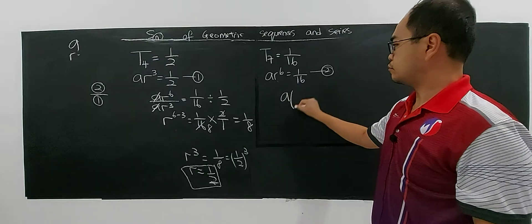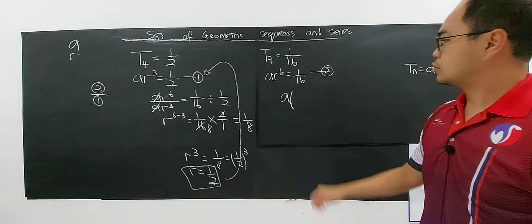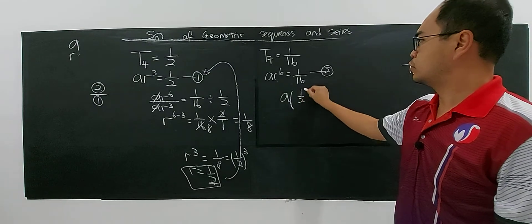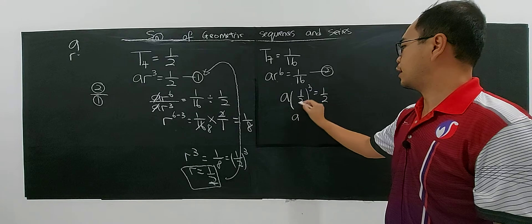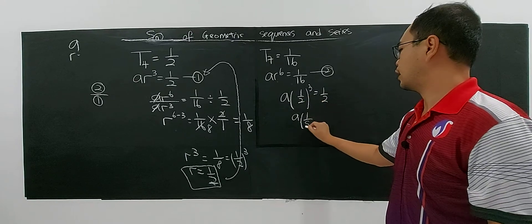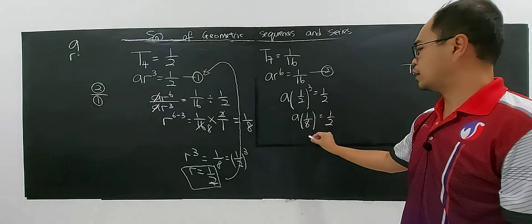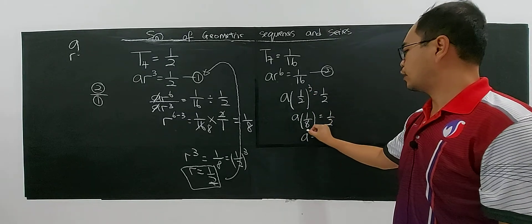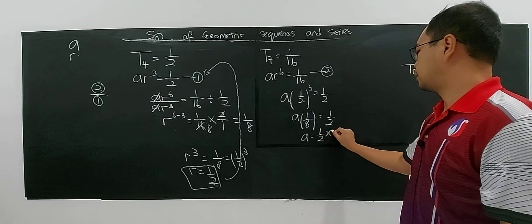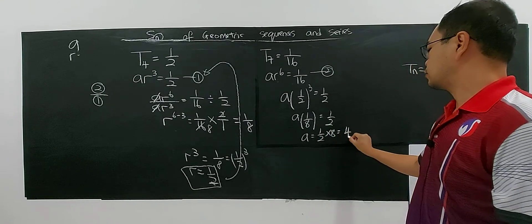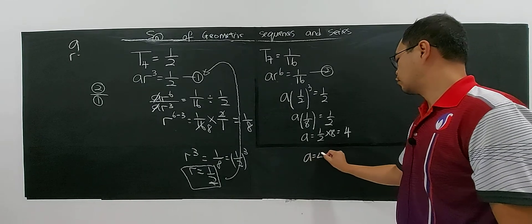So A, I put into equation 1. So 1 over 2 to the power of 3 equals 1 over 2. So A, 1 over 8 equals 1 over 2. 1 over 2 power of 3 is 1 over 8. So A, 1 over 8, go over there become 1 over 2 multiply with 8, which is 4. So then you have value of A equals to 4.